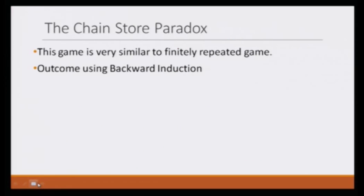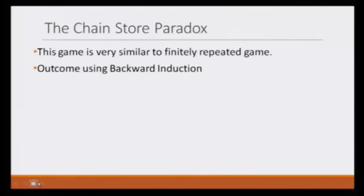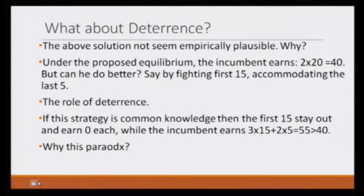Using backward induction, we learn that in all markets the challenger or entrant would enter, and the monopolist would accommodate them. But is this the best strategy for the monopolist? Let us see.